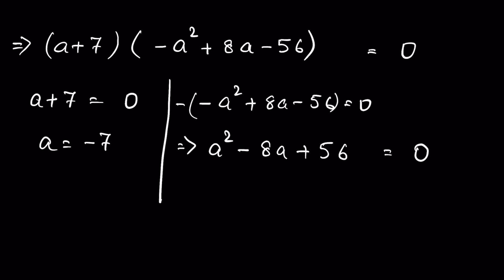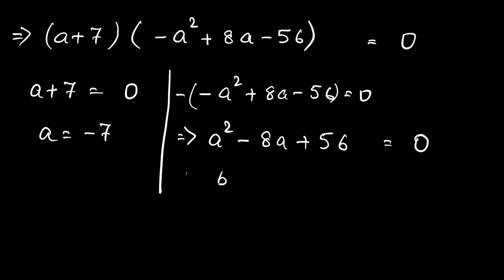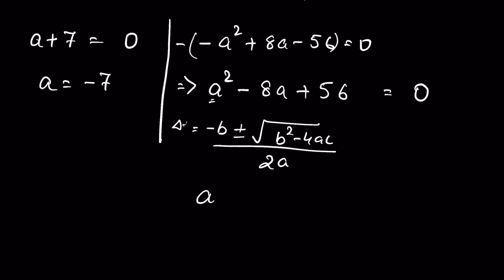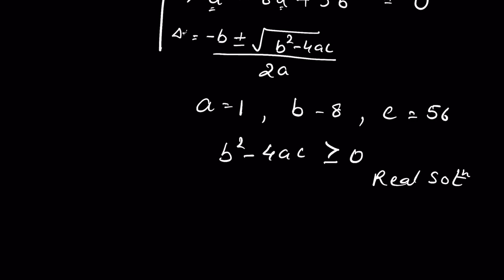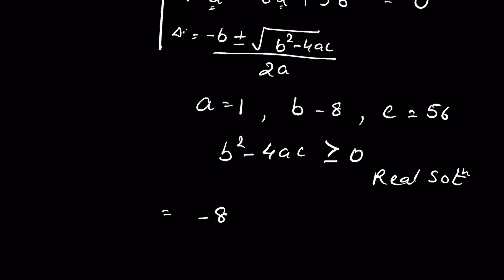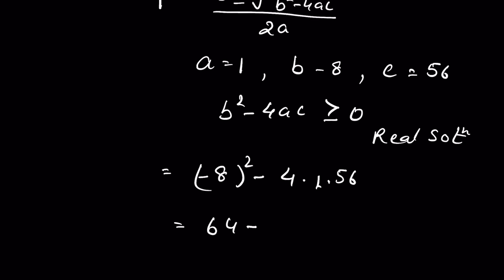We find the roots of a² − 8a + 56 = 0 using the quadratic formula: (−b ± √(b² − 4ac)) / 2a, where a = 1, b = −8, c = 56. Checking the discriminant: b² − 4ac = 64 − 4(1)(56) = 64 − 224 = −160, which is less than 0. So there are no real roots from this factor.